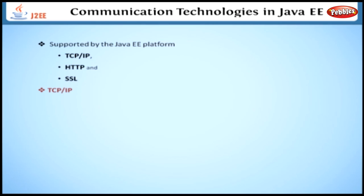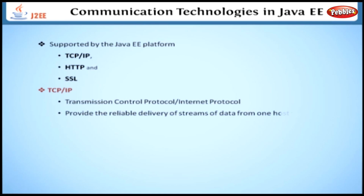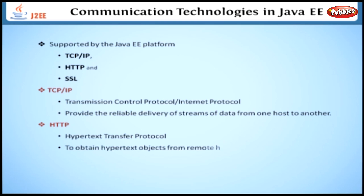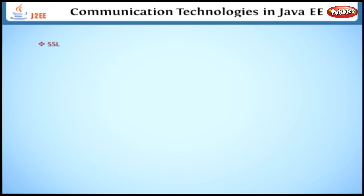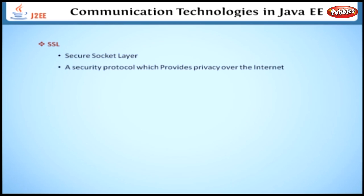TCP/IP — Transmission Control Protocol / Internet Protocol — these protocols provide the reliable delivery of streams of data from one host to another. HTTP — Hypertext Transfer Protocol — is used to obtain hypertext objects from remote hosts. HTTP messages consist of requests from client to server and responses from server to client. SSL — Secure Socket Layer — is a security protocol which provides privacy over the internet.